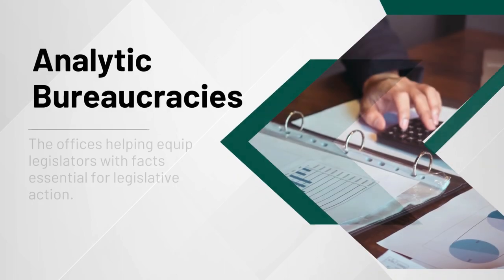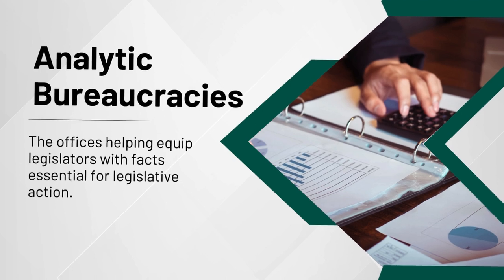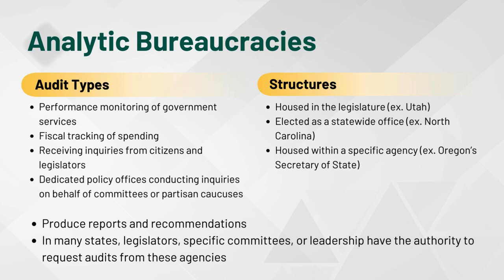Let's take a closer look at analytic bureaucracies — a fancy term for the offices helping equip legislators with facts essential for legislative action. Some types include performance monitoring of governmental services, fiscal tracking of spending, ombuds receiving inquiries from citizens and legislators, and dedicated policy offices with staff conducting inquiries on behalf of their committees or partisan caucus. Auditors come in several structural varieties: those housed in the legislature like Utah, elected as a statewide office in North Carolina, and within specific agencies like Oregon's Secretary of State. Auditors provide reports full of facts and at times recommendations for the legislature. In many states, legislators, specific committees, or leadership have the authority to request audits — another superpower for oversight at your disposal.